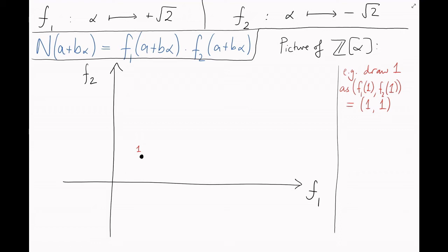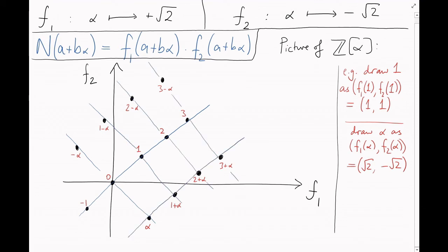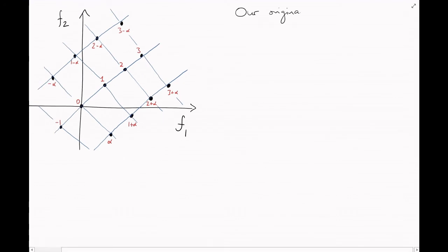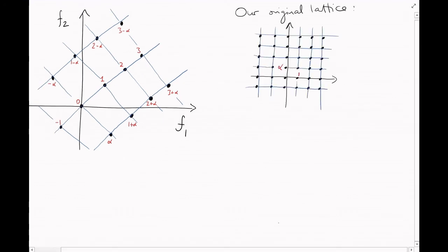All right, what about alpha? f1 sends alpha to root 2, and f2 sends alpha to minus root 2. So we put alpha at the coordinates root 2 comma minus root 2. And now you can check that the element a plus b alpha for a and b integers gets sent to a times 1 comma 1 plus b times root 2 comma minus root 2. This is a lattice again. In fact, this is just our original additive lattice, rotated and reflected a bit, stretched by a scale factor of root 2 in this direction, and 2 in this direction.